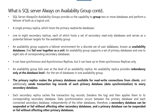Availability group databases are actually failed together as a unit - they always fail together as a unit. It provides synchronous and asynchronous replicas and helps you implement redundancy, but only at the database level.